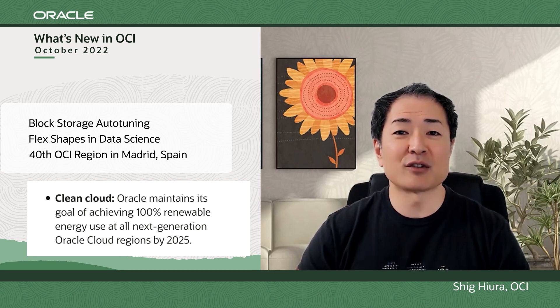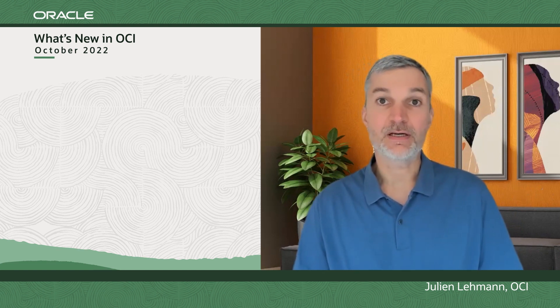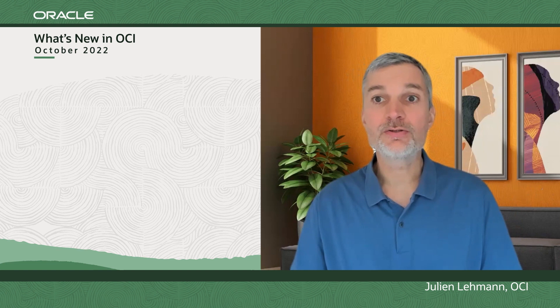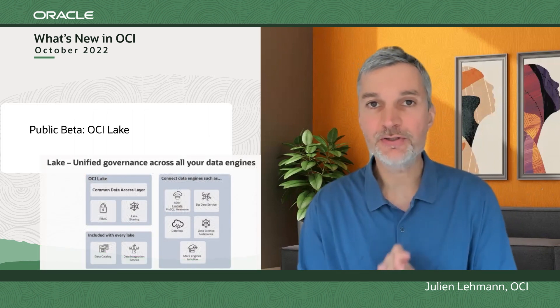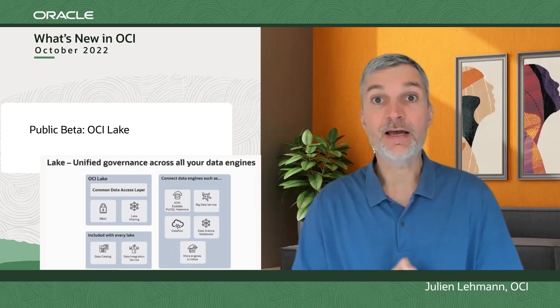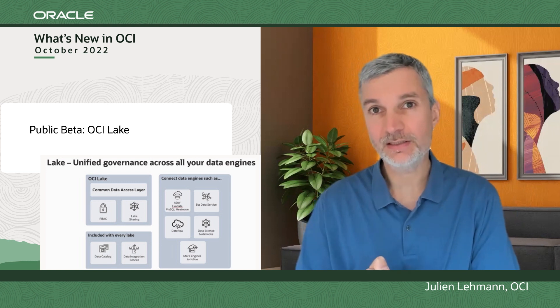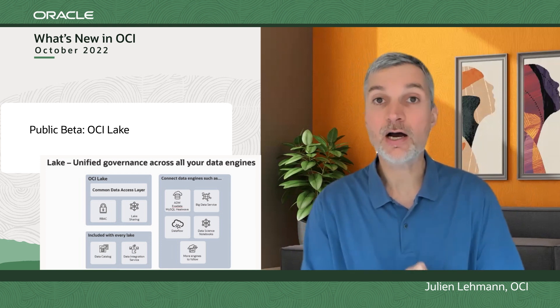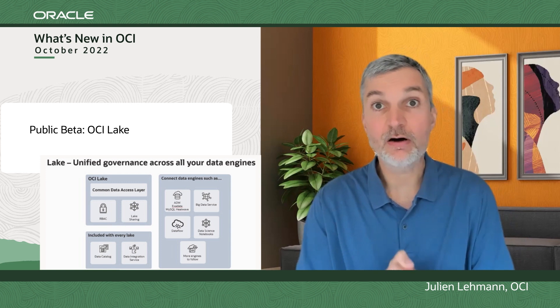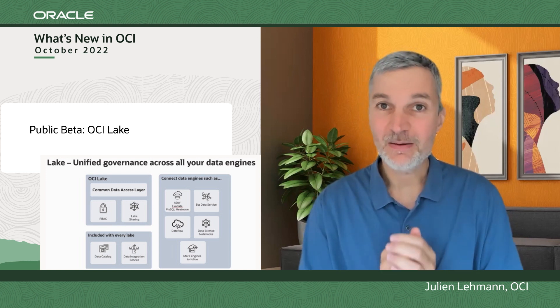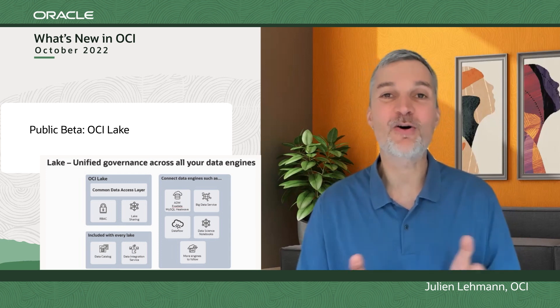As you are processing an increasing amount of data — structured and unstructured — you often build data lakes in object storage to complement your databases and data warehouses. We are glad to announce the release of our new service, OCI Lake, to secure and control access to your data in object storage and how your data is shared. Access rights can be set by bucket, by object, or by field. So, build more secure data lakes in OCI with OCI Lake.